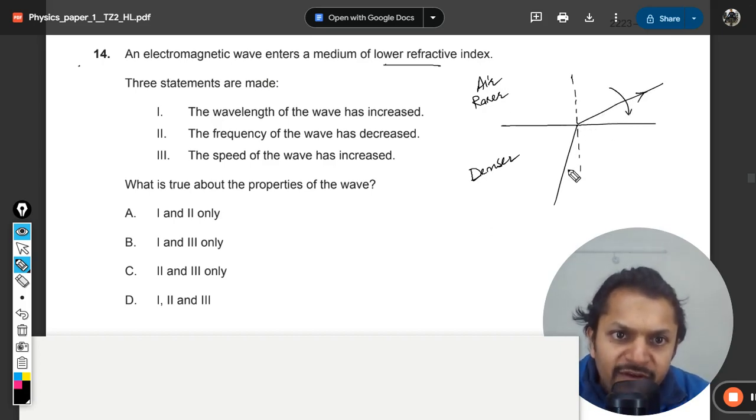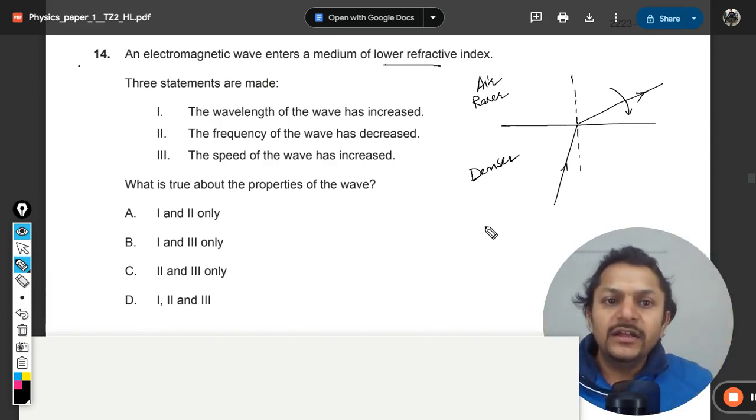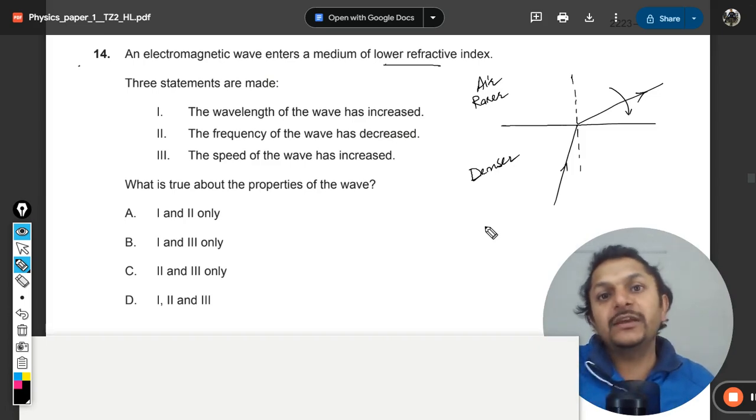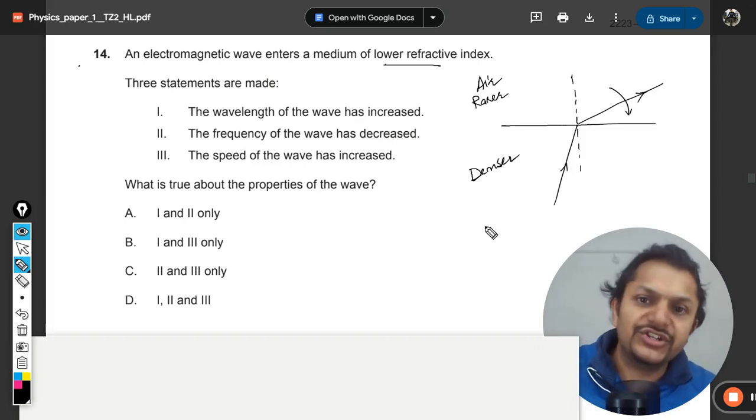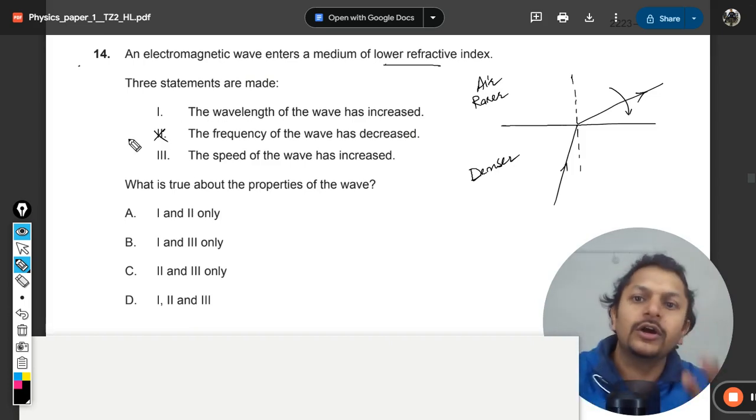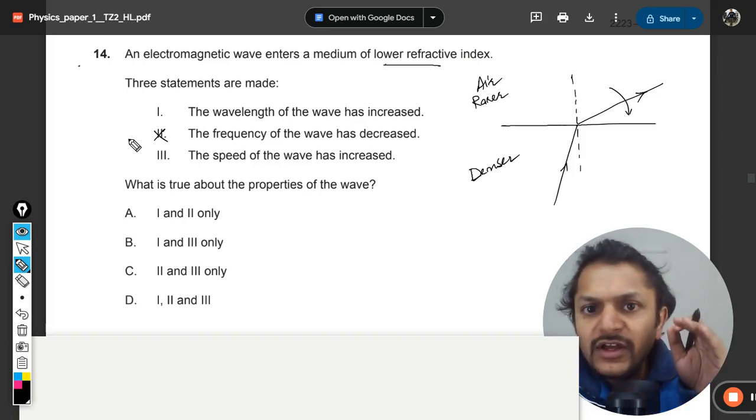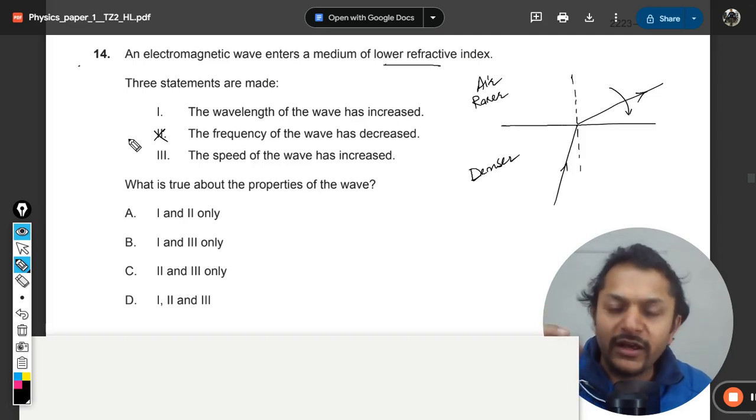It would be bending away from the normal, that we know. Now one thing is clear that whenever refraction is taking place at these kind of surfaces, the frequency doesn't change. So the wavelength of the wave has increased, the frequency has decreased—so two is definitely wrong. Frequency of the wave has decreased? Frequency doesn't change, mind it.